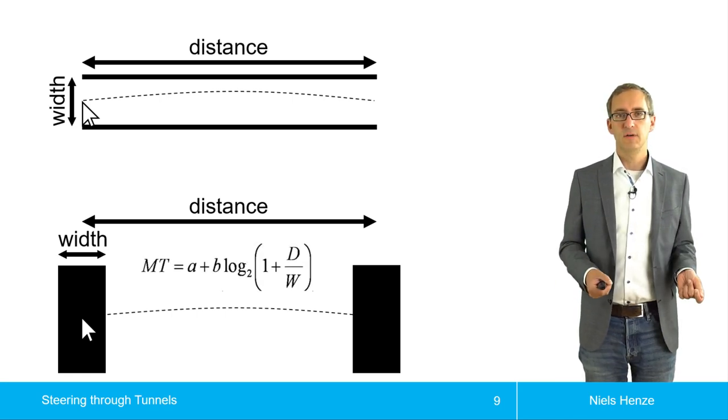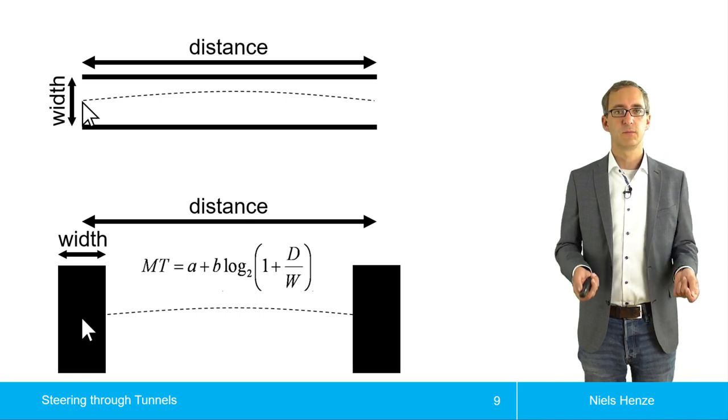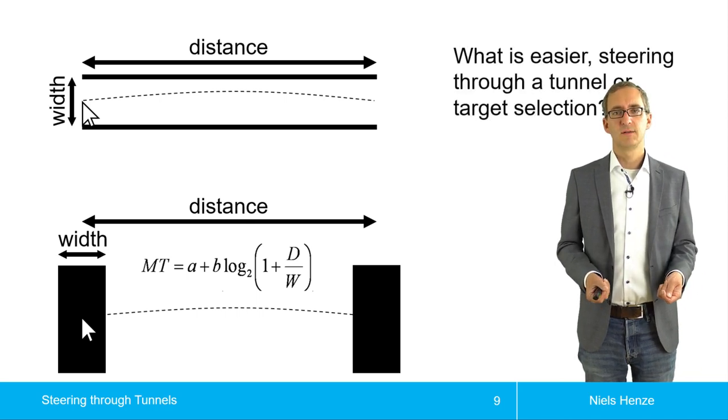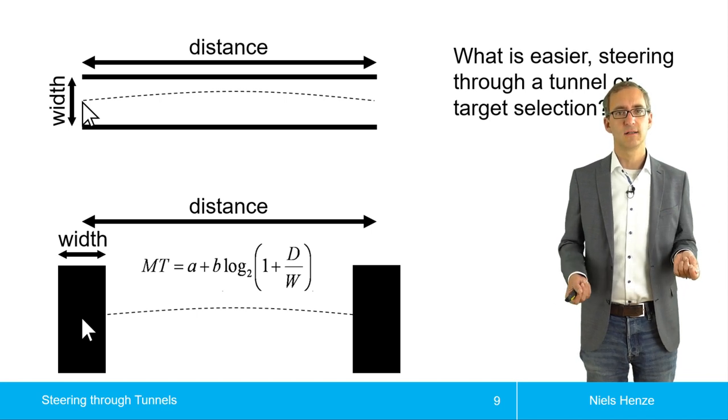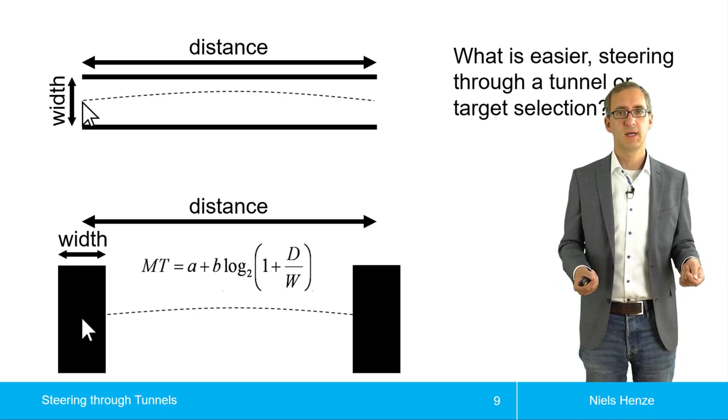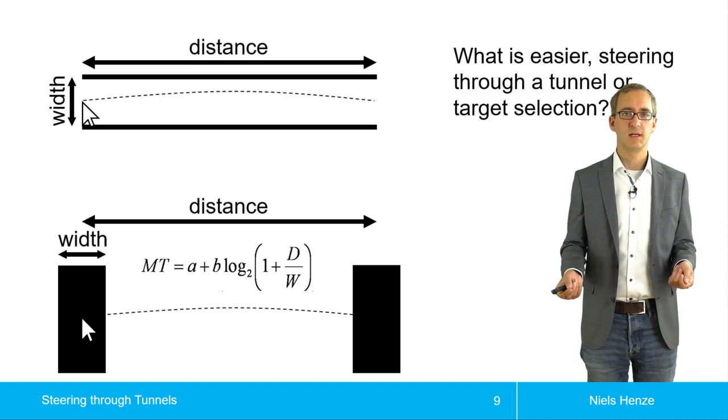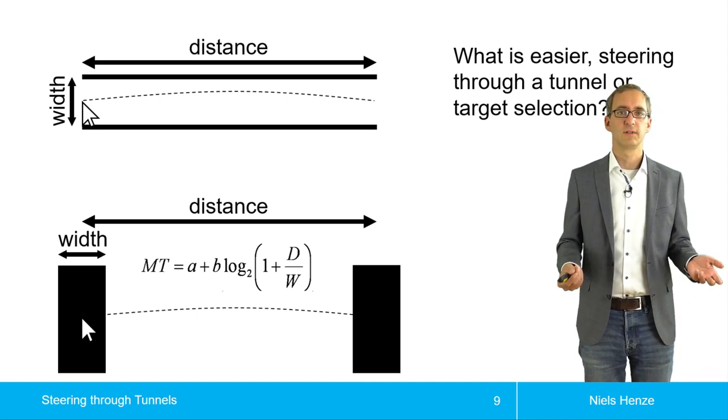And for Fitts' law, we already have an equation that enables us to make predictions. And what we might wonder is, is it actually easier or harder to steer through this tunnel compared to reaching a target as you would model with Fitts' law?